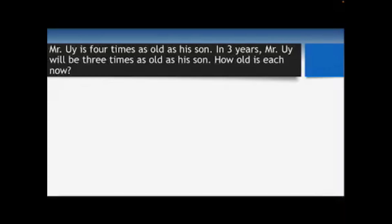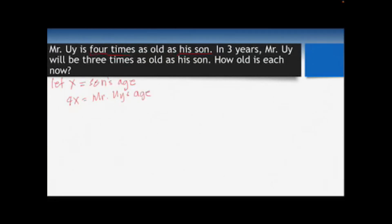While reading, take down what is given and what is being asked. Starting with the first sentence: Mr. Ui is four times as old as his son. If we let x be the son's age, then Mr. Ui's age will be four times of x, so that will become 4x.